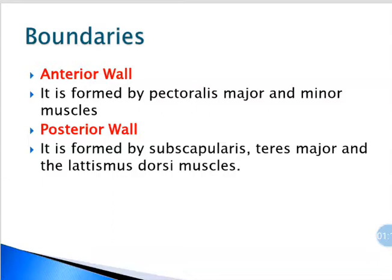The anterior wall is formed by muscles pectoralis major and minor. The posterior wall is formed by muscles subscapularis, teres major and latissimus dorsi.